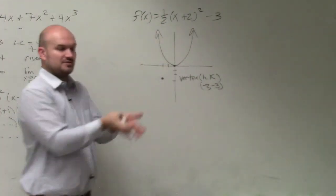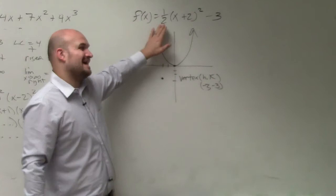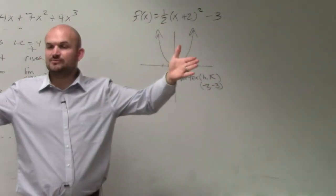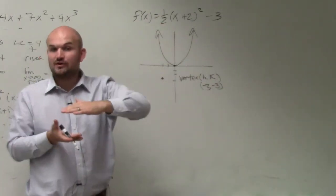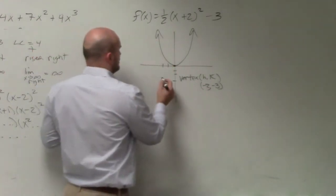Now, my a is still positive, so the graph is still going to open up. But I also can see that I'm multiplying by a is 1 half. And if you guys remember, that's going to be vertically compressing the graph, right? So therefore, or a horizontal stretch. So it's going to look a little bit wider.